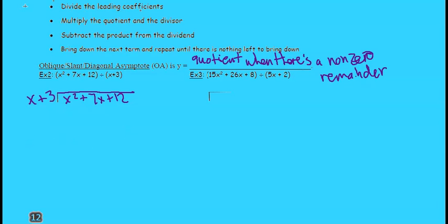So the first step, we want to divide the leading coefficients. The leading coefficients is x and x squared. x squared divided by x is just x. So we're going to write that above the x term.